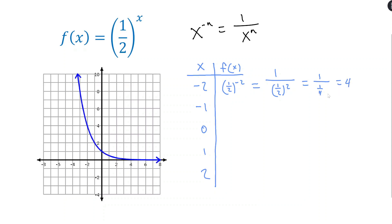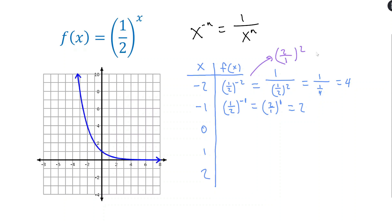However, there's an easier way. Anytime we have a fraction raised to a negative power, we can flip the fraction and make the power positive. So instead of (1/2) to the negative 2, we write (2/1) to the 2, which is 2 squared = 4. This way we don't have to divide fractions at all. Take the reciprocal, make the power positive — much easier.